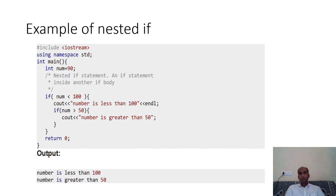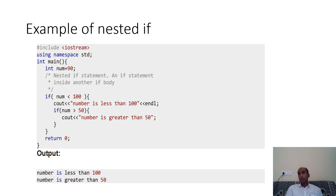In the example, I have int num = 90. First condition: if num is less than 100 — true — so 'number is less than 100' is displayed, followed by a newline using endl. Then the nested condition checks: if num is greater than 50 — 90 greater than 50 is true — so 'number is greater than 50' is also displayed. Then we come out of the function.